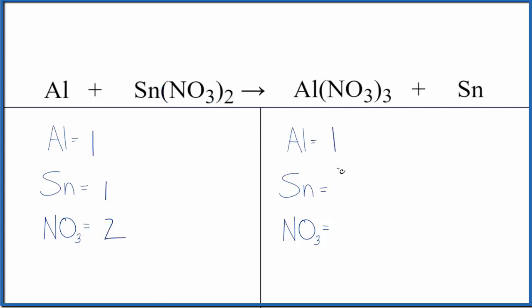Over here, I have one aluminum, one tin, and then I have the nitrate times three, three of those. So you can see this is a lot easier to deal with. It's faster and you get the same answer either way.